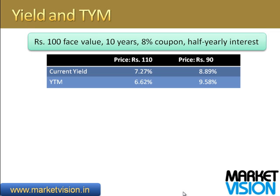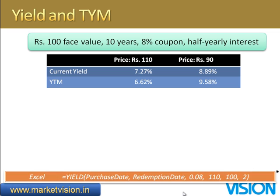The calculation takes care of all of that. You'll notice that for the 110-rupee bond, the yield to maturity is less than the current yield, and the current yield is less than the coupon rate of 8%. In the other case, when you pay a discount — 90 rupees for a 100-rupee bond — the yield to maturity is higher than the current yield, and the current yield is higher than the coupon. That's the way it's supposed to be.